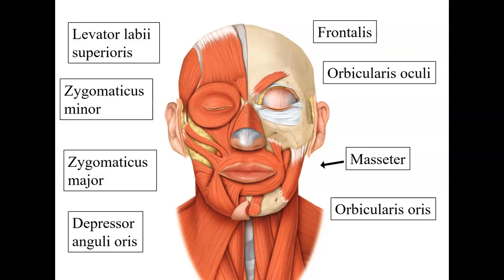Next we go to the masseter. Masseter literally means chewer. It's going to elevate or pull upwards the mandible when you chew. So it pulls or elevates the mandible. Oris means mouth — the orbicularis oris is the sphincter muscle around the mouth and it closes the lips shut. Those are some of the muscles you can see in this particular frontal view of the face.